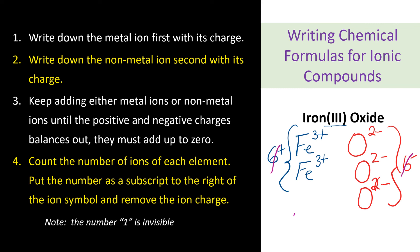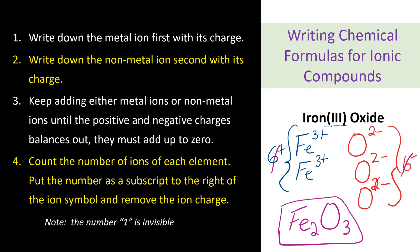Now rewrite the elements and count the number of each ion present, writing that number as a subscript to the right of the ion symbol. We have 2 irons — put 2 here. We have 3 oxygens — put 3 here. This is the formula for iron 3 oxide: Fe₂O₃.